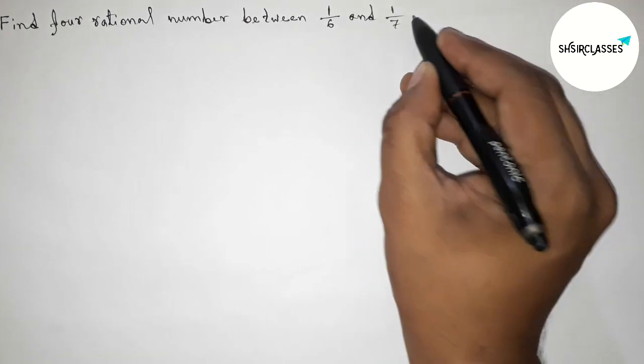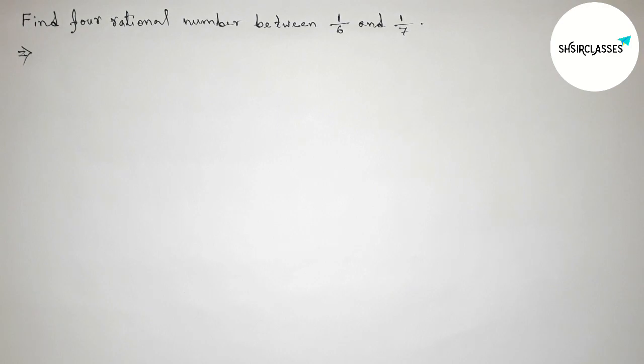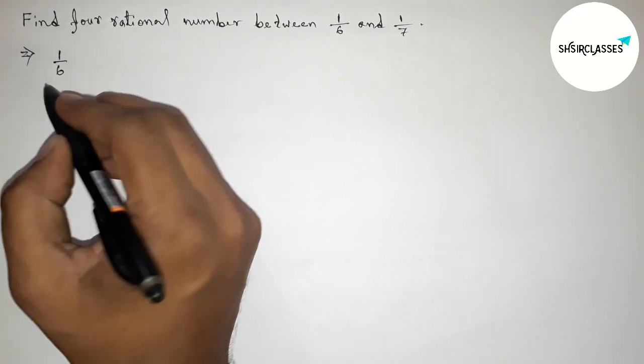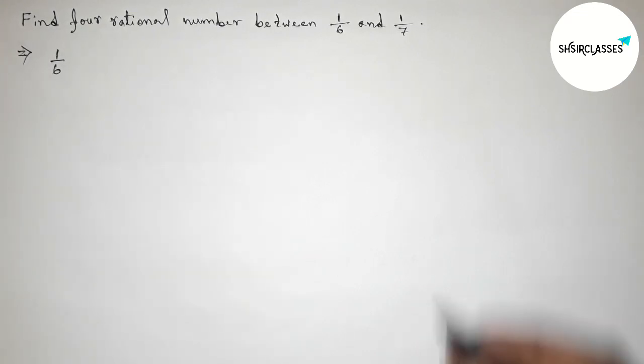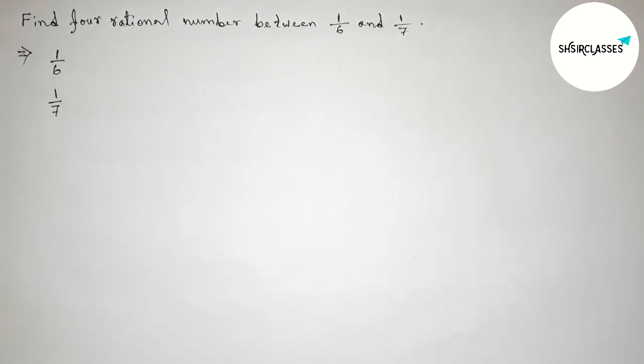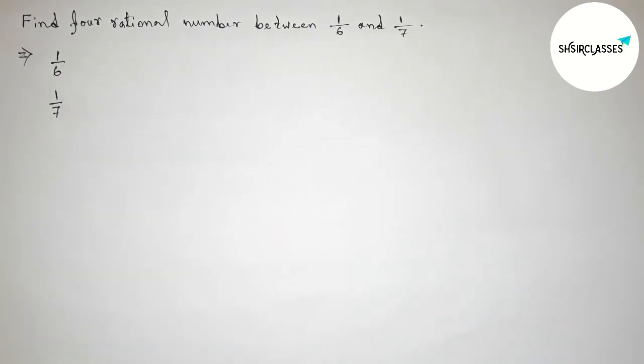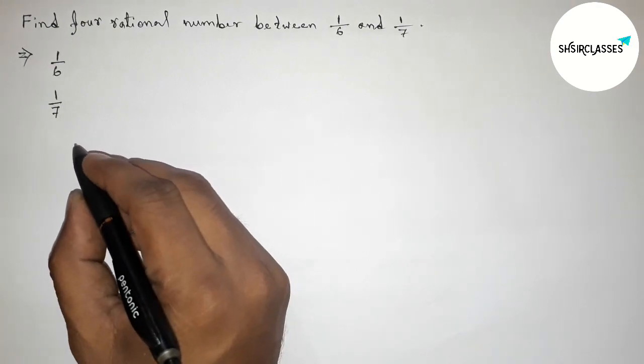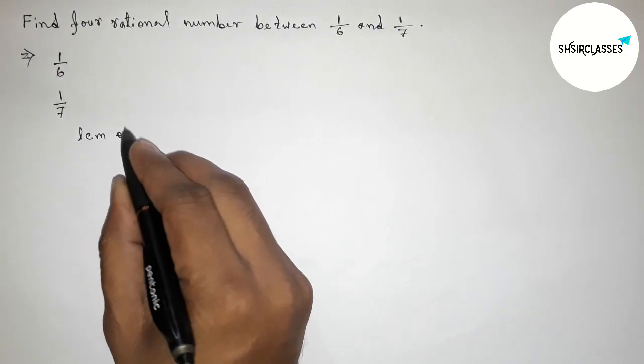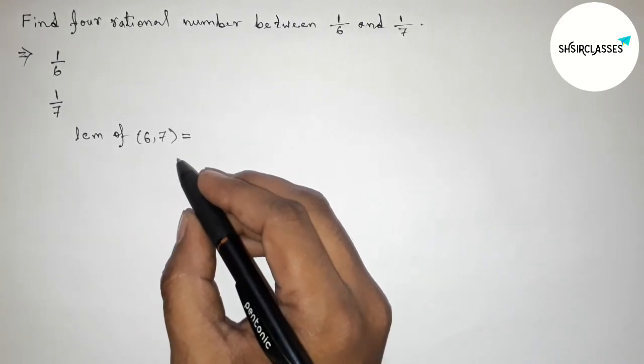First of all, let us solve this problem. Here, the first rational number is 1 by 6 and the second one is 1 by 7. Here both the denominators are not same, so we have to make same denominator.